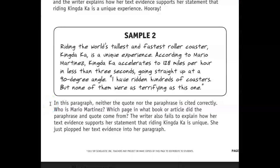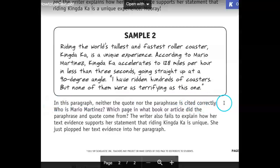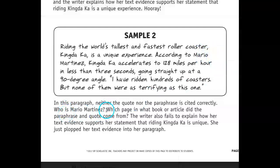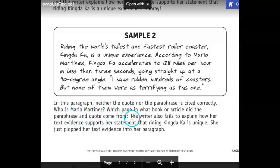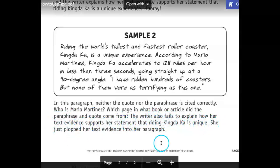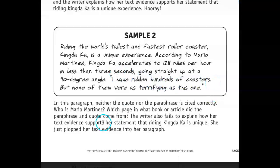It says in this paragraph: neither the quote nor the paraphrase is cited correctly. Who is Mario Martinez? Is that the author? Which page, in what book or article, did the paraphrase and quote come from? The writer also fails to explain how her text evidence supports her statement that riding King Dakar is unique. She just plopped her text evidence into the paragraph — copied, pasted, put a quote around it, and done. That's not good enough. So let's look at a strong example.